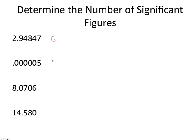We also talked about how any zeros at the beginning of a number are never significant and that they're just placeholders. So in this value we only have one significant figure, which would be the number five.